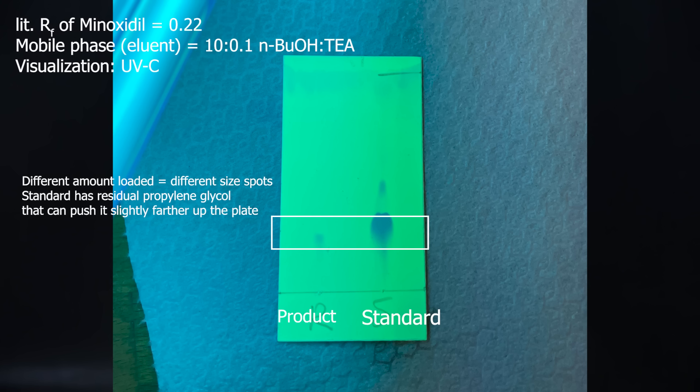The size of the spots are different because I didn't put on the same amount on the plate. Also because the standard contains some of the solvent propylene glycol which barely evaporates from the plate, it causes an increase in polarity for this lane only and pushes the spots further up. So it's clear that it helped the standard spot travel slightly farther. Either way the position of the spot matches the travel distance in literature, which is why I used this specific eluent. And it is also similar enough to the standard, so it's an easy and cheap method to pretty much verify that I have minoxidil.